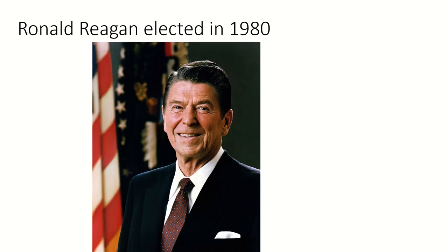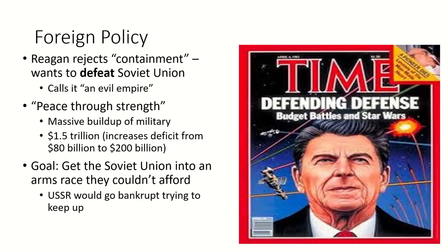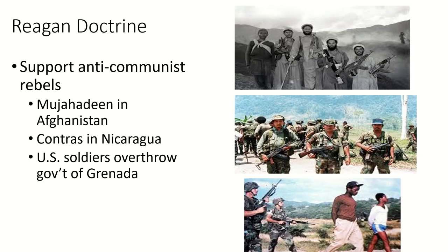In 1980, Ronald Reagan was elected president with a very different foreign policy approach. Reagan was the first president in some time to reject containment — he wanted to defeat the Soviet Union and openly called it the 'evil empire.' Reagan advocated peace through strength, spending $1.5 trillion on defense in a massive military buildup, including programs like Star Wars — a missile defense laser system that was never completed. The goal was to force the Soviet Union into an arms race they could not afford, putting pressure on their government to collapse. Reagan also increased U.S. commitment to anti-communist fighters worldwide, supplying the Mujahideen and the Contras in Nicaragua, and overthrowing the government of Grenada.